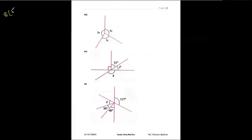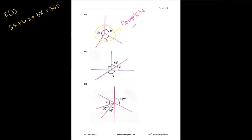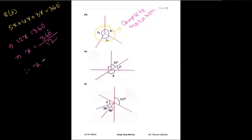Now for 8d. Similarly, we can say these three angles make a complete rotation of 360 degrees. We write: 5x plus 4x plus 3x equals 360 degrees. Because these three angles make a complete rotation. Adding the coefficients: 5 plus 4 is 9, 9 plus 3 is 12. So 12x equals 360 degrees. Therefore x equals 360 divided by 12, which is 30 degrees. That is the answer of 8d.